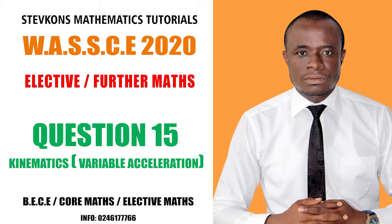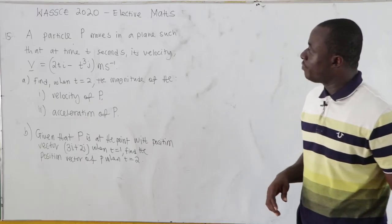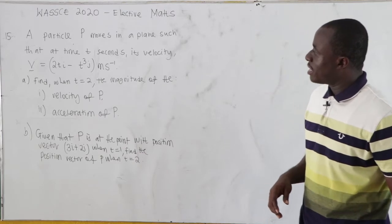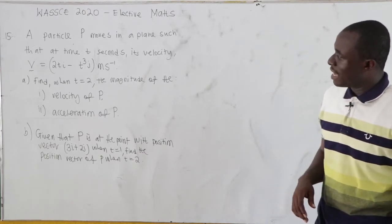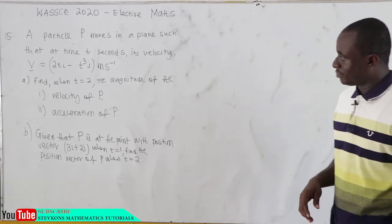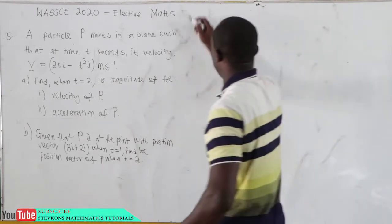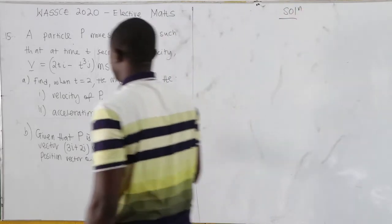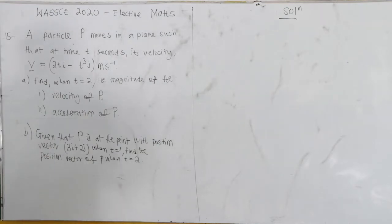This is 2020, question number 15. A particle P moves in a plane such that at time t seconds, its velocity v is equal to 2ti minus t³j meters per second. We are being told to find, when t equals 2, the magnitude of the velocity.